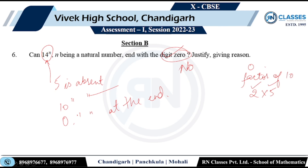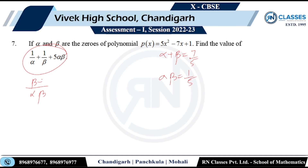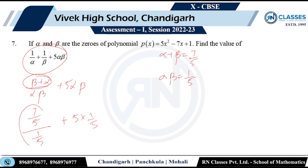If alpha and beta are the zeros of a polynomial, the sum of zeros is given as 7/5 and the product of zeros is 1. Find the value of the expression (alpha + beta) + 5·alpha·beta. This simplifies to 7/1 + 5 × 1. Calculating: 7 + 1 = 8. The answer is 8.